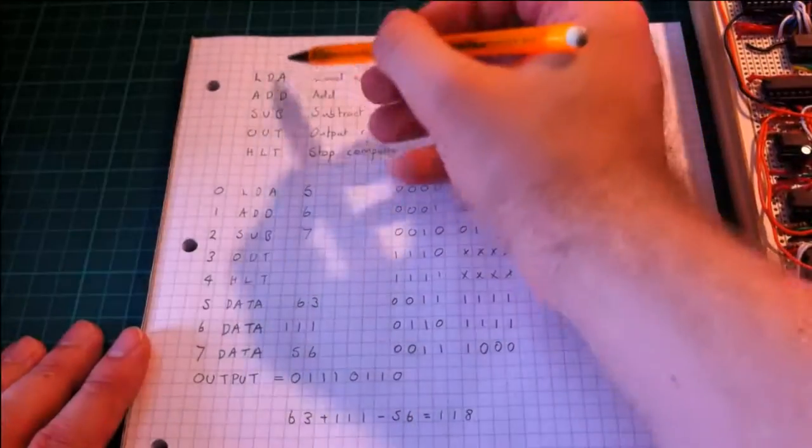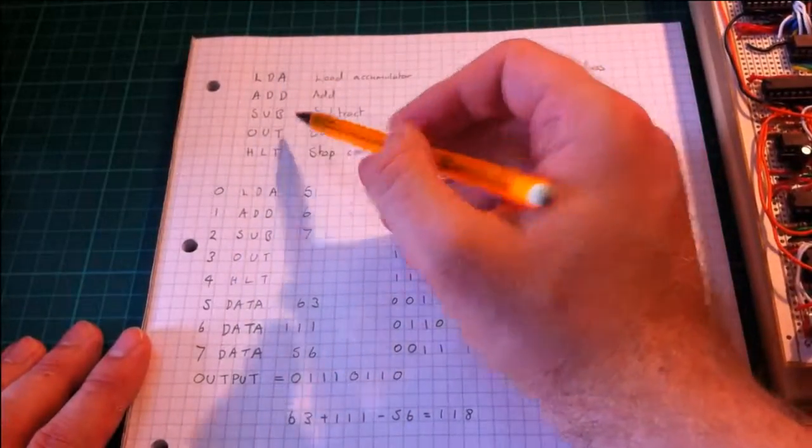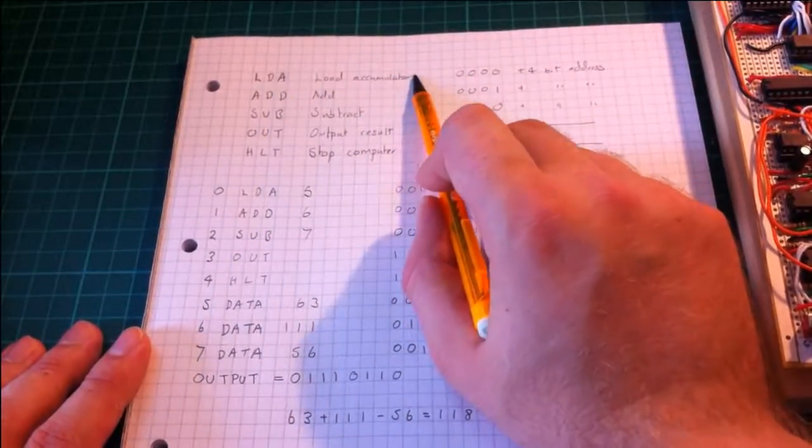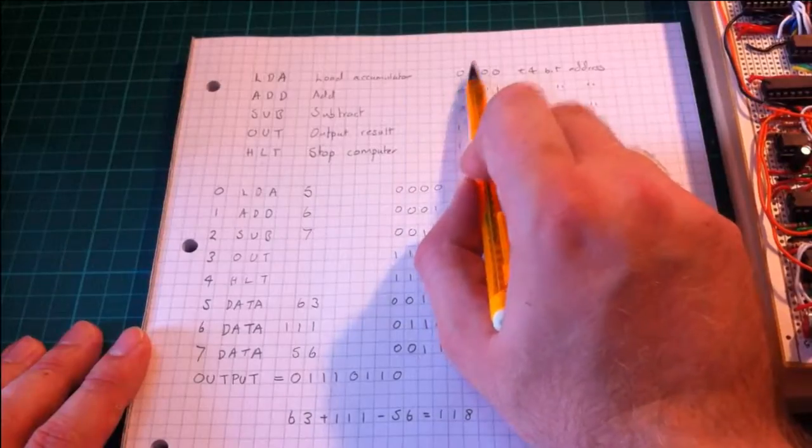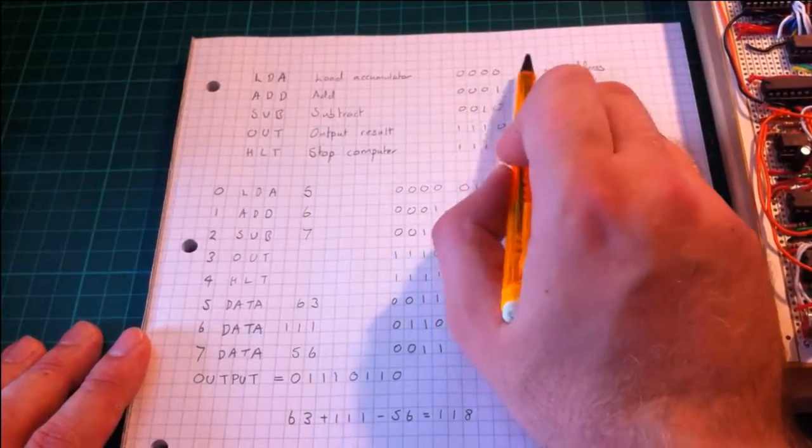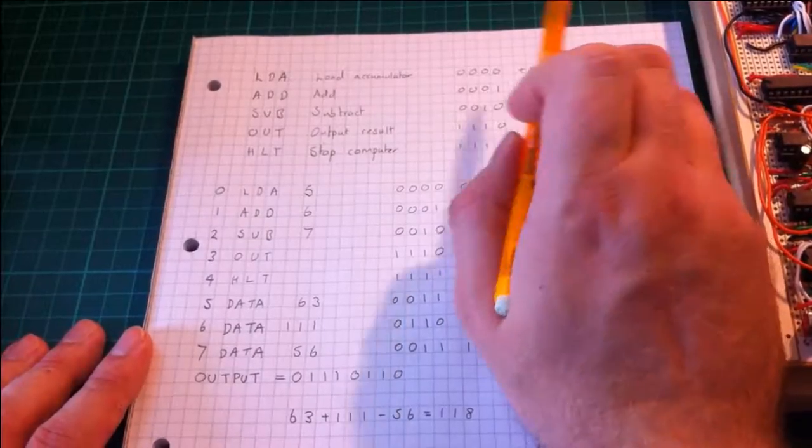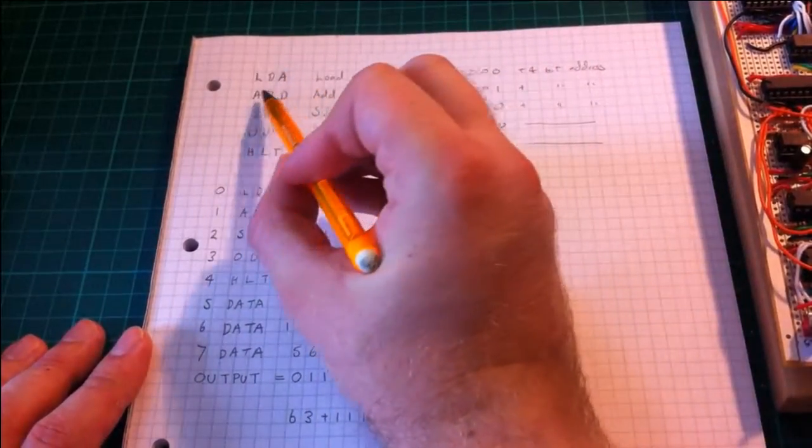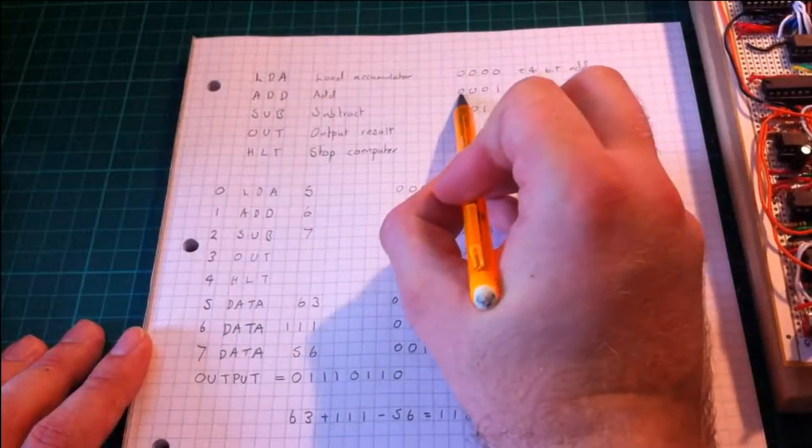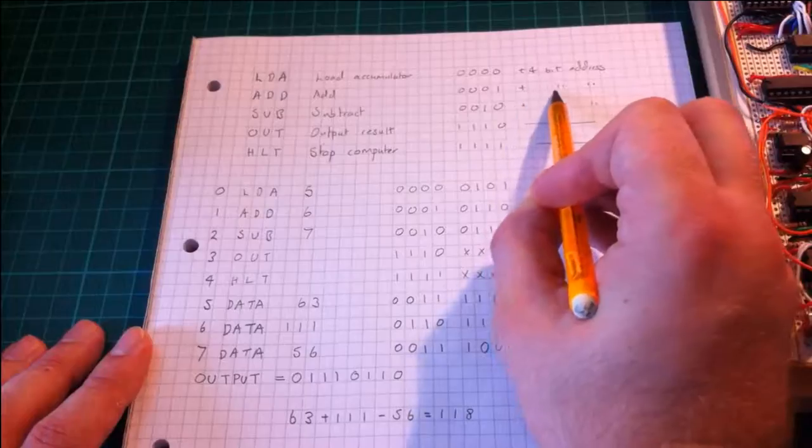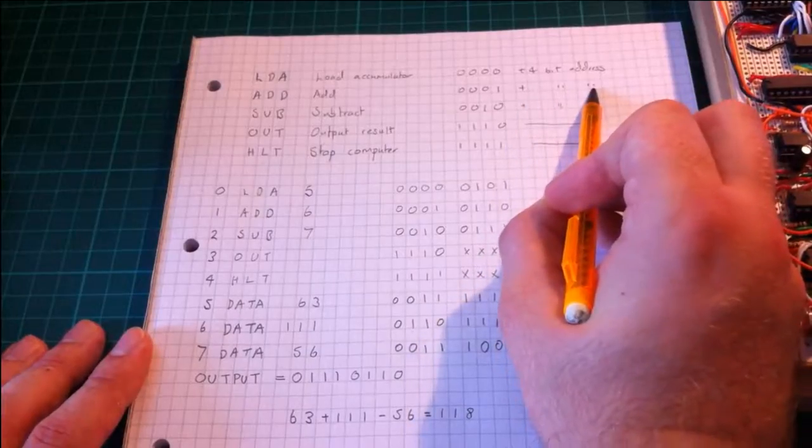The computer has five different instructions. The first is to load the accumulator, and the computer is told to do this with the opcode 0000 followed by a 4-bit address with the number to be added.